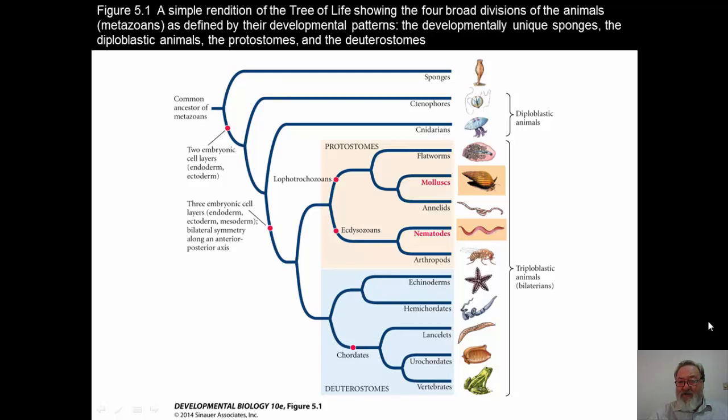As we continue forward and down the list, there are triploblastic animals, and those are the conventional animals we think of as animals. There are the flatworms, which are the protostomes. There's a protostome group starting with the flatworms, mollusks, annelids, and also there are nematodes and arthropods that go into that protostome group. And what protostome means is basically mouth first.